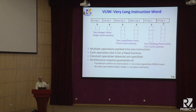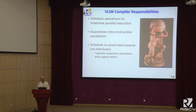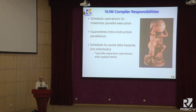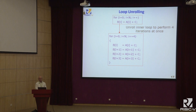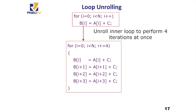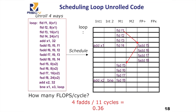The VLIW idea was to keep hardware simple and put everything into the compiler. In a typical example, an instruction might have slots for two integer operations, two memory operations, and two floating-point operations. The compiler was responsible for scheduling, maximizing parallel execution, guaranteeing no dependencies, and avoiding data hazards — there were no interlocks in hardware. Loop unrolling was a key technique: unrolling a loop four times could potentially execute all four iterations in parallel.